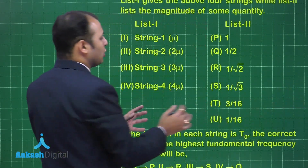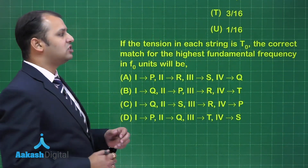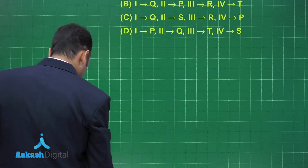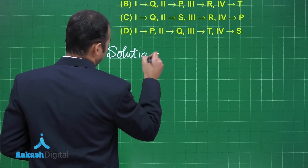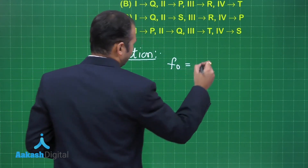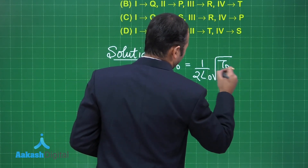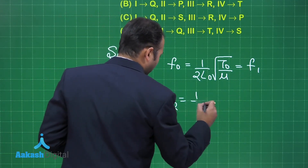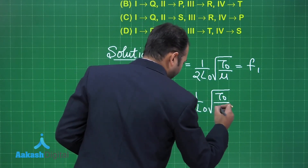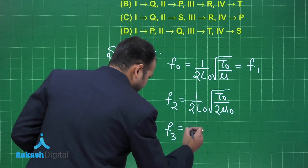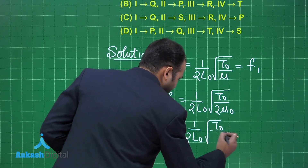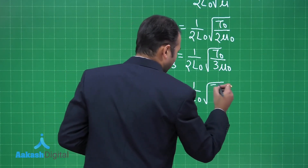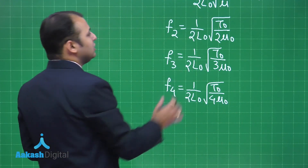The question asks: if the tension in each string is T0, find the correct match for the highest fundamental frequency in F0 units. For the solution, the formula for fundamental frequency is F = 1/(2L0) × √(T0/mu). So F1 = 1/(2L0) √(T0/mu), F2 = 1/(2L0) √(T0/2mu), F3 = 1/(2L0) √(T0/3mu), and F4 = 1/(2L0) √(T0/4mu).